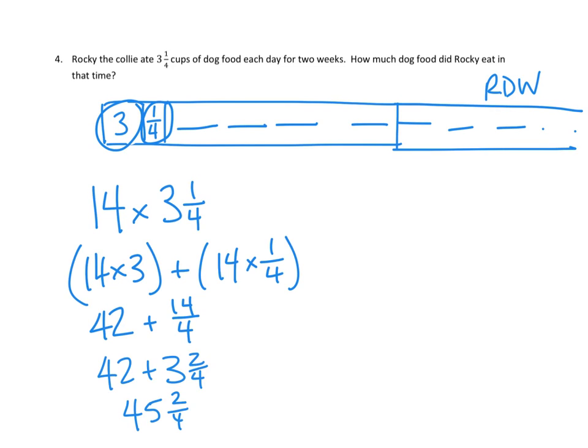So it looks to us like we've done our read and our draw. We kind of just did a partial drawing. And now we've got to do our write. Rocky ate 45-and-two-fourths cups in two weeks or 14 days. And that's our write strategy. So I hope you've had a good time tonight watching another episode of Mr. Kong Has Problems. And I wish you the best of luck as you conquer your homework tonight. See you again next time. Bye-bye.